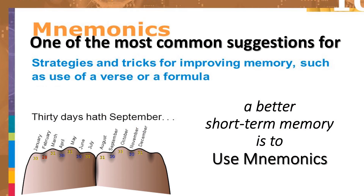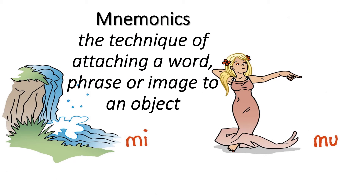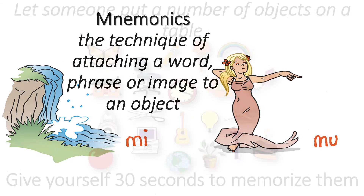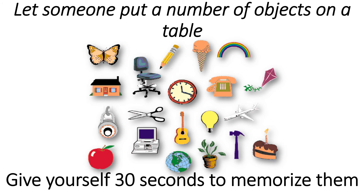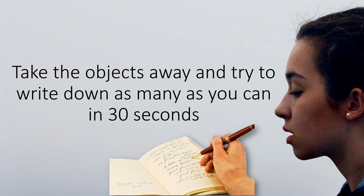How to improve short-term memory: one of the most common suggestions is to use mnemonics — the technique of attaching a word, phrase, or image to an object. Another trick is to have someone put a number of objects on a table, give yourself 30 seconds to memorize them, then take the objects away and try to write down as many as you can in 30 seconds.